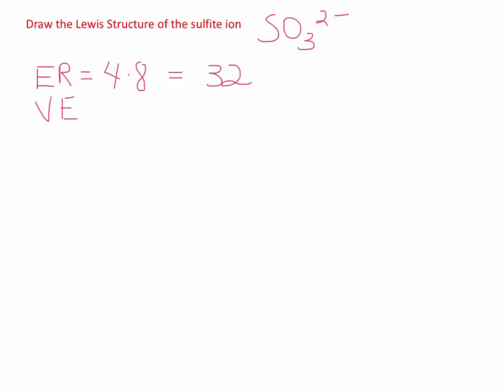What about our valence electrons? Sulfur is in group six. There are three oxygens, which are also in group six. And here's the piece that often students forget. This is an ion with a two minus charge. So we need to add two additional electrons to our valence electron count, for a total of 26 valence electrons.